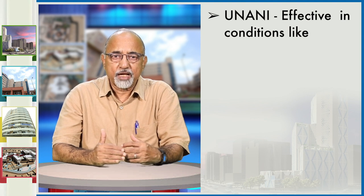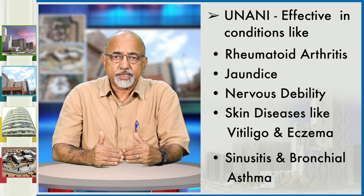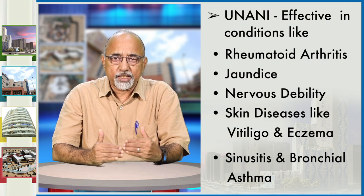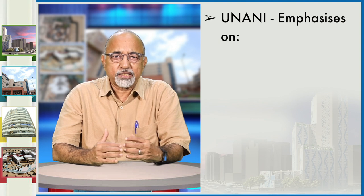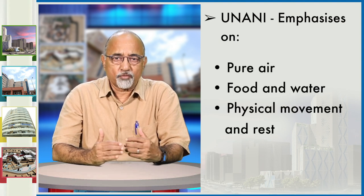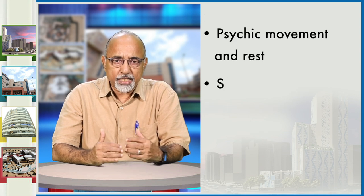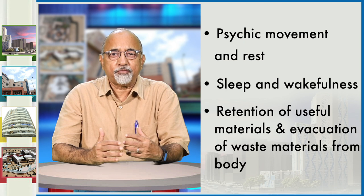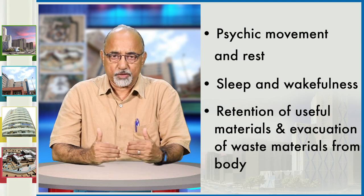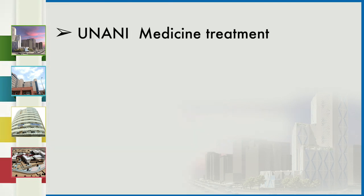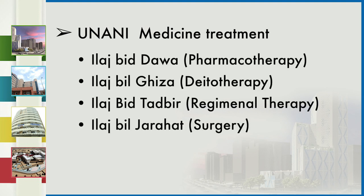Unani is effective for conditions like rheumatoid arthritis, jaundice, nervous debility, skin diseases, vertigo, eczema, sinuses and bronchial asthma. The emphasis in Unani is on pure air, food and water, physical movements and rest, psychic movement and rest, sleep and wakefulness, and retention of useful materials and evacuation of waste materials from the body. Unani medicine treatments include pharmacotherapy (Davah), dietotherapy (Ghiza), regimenal therapy (Tadbir) and surgery (Jarahat).